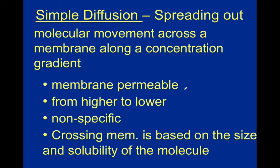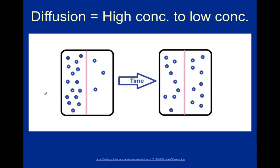Substances that can be transported by simple diffusion need to be able to cross the cell membrane without any additional opposition. Substances generally able to be transported by simple diffusion are larger nonpolar molecules as well as very small molecules. Based upon the chemical composition of the cell membrane, nonpolar molecules have a much easier time crossing it than polar molecules do. The size and solubility of a molecule determine how readily something can cross the cell membrane by simple diffusion.